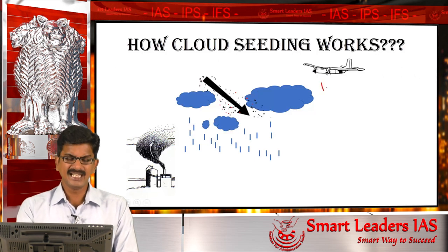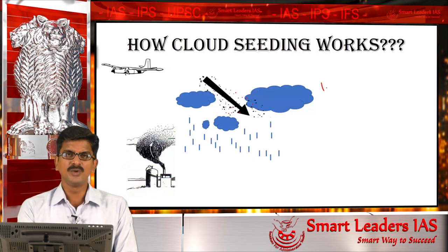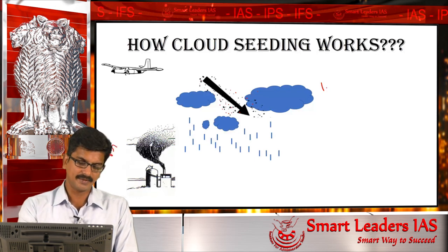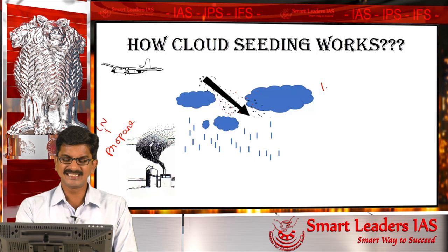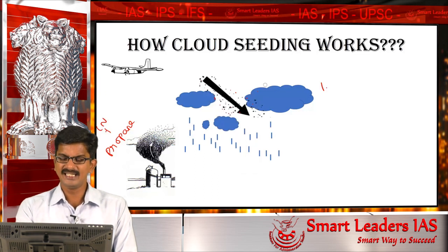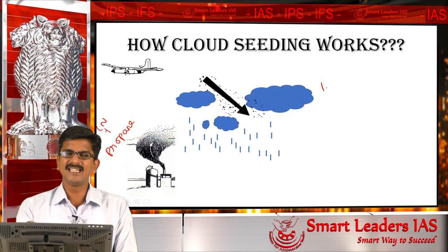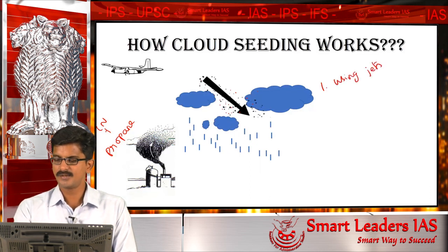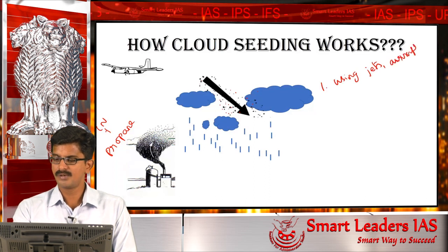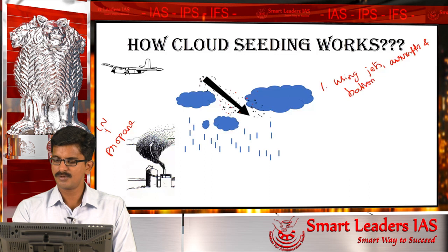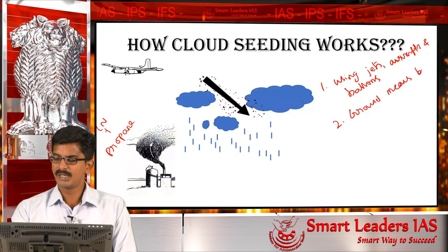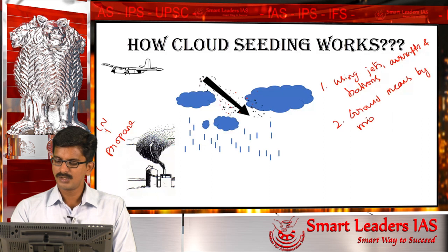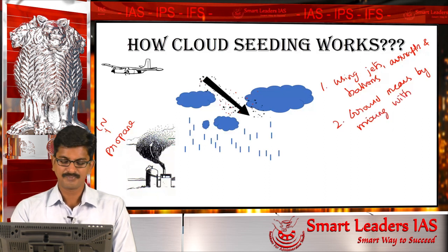There are two methods. The first is through aerial means. The second method is from the ground, where the cloud nuclei particles are mixed with propane. The propane rises up in the atmosphere, reaching the clouds. So cloud seeding can be done by two means: through aerial means using jets, aircraft, and balloons; or through ground means by mixing with propane.